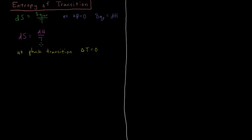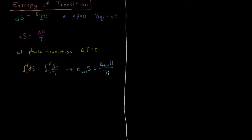So both of these being state functions, and temperature being constant during a phase change, we can integrate both of these values. We have the integral from the initial to the final conditions of dS, and then the integral from initial to final conditions of dH over T, with T being constant. Both of those integrals solve to: ΔS of transition equals ΔH of transition divided by the temperature of that transition.